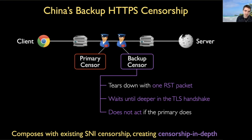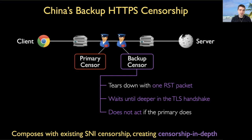Before I continue, I do want to contextualize this and make it clear that our measurements, just like all censorship research, are limited by the vantage points we have access to. We did all these experiments with two vantage points located in different ISPs, so it's possible there's further variation in other geographic locations. If there's anyone in the audience that has a broader reach into China and wants to look at this more with us, please don't hesitate to reach out after the talk.